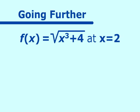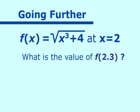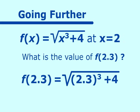Let's go a little bit further on this. We can create these equations, but how do we really use them? We look at how the value of the function compares with the value on the tangent line, or the linearization. On our problem, f of x equals the square root of x cubed plus 4, at x equals 2, we want to find the value at 2.3. So if we substitute 2.3 in for x, we get f of 2.3, which equals the square root of 2.3 cubed plus 4, and we get 4.021 when we round it.